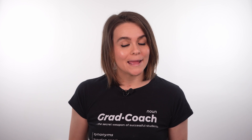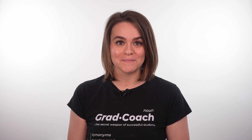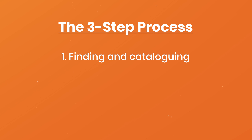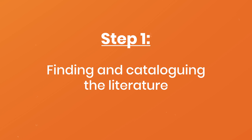Now that we've covered what a literature review is and why it's so important, let's look at how to go about putting this meaty chapter together. We'll break the lit review process into three main steps: finding and cataloging the literature, planning and outlining your chapter, and writing up your actual literature review. So let's start with the first step — finding and cataloging the literature.